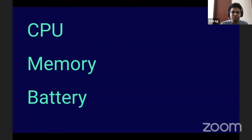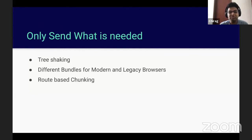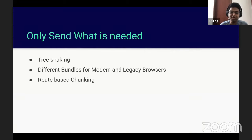So what do we do? Only send what is needed, and this can be done via tree shaking. Tree shaking is when you are creating bundles for your application — most bundlers can be configured to remove code from libraries that is not being used by your application code. It cuts down on overall bundle size. This is something you would need to look at in your bundling pipeline, but it is worth the effort.